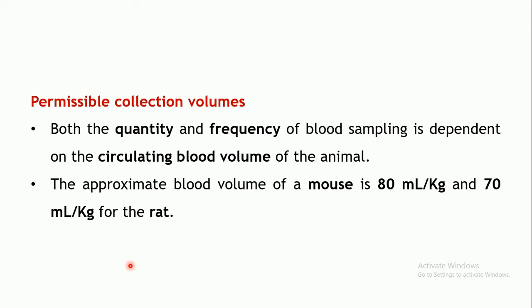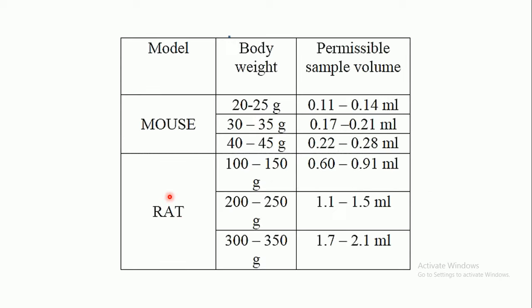Now let us see the permissible volumes of blood which can be collected from different species. The most commonly used animals are mice and rats. The quantity and frequency of blood sampling depend upon the circulating blood volume of the animal. A mouse is a smaller animal with a blood volume of 80 ml per kg, and for rats it is 70 ml per kg.